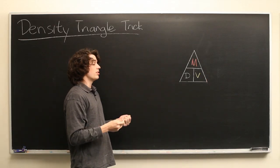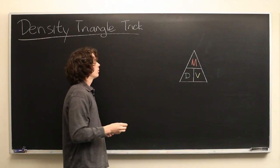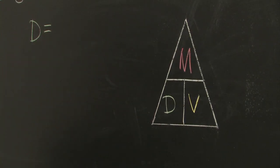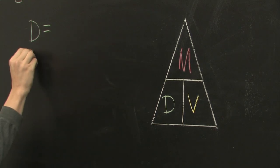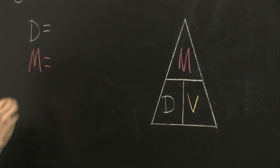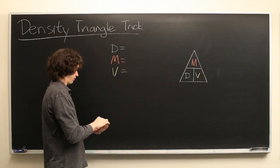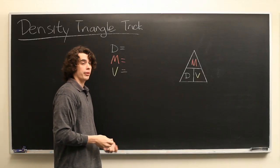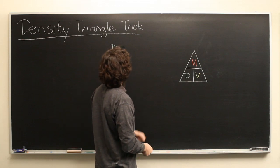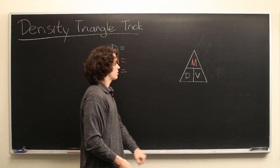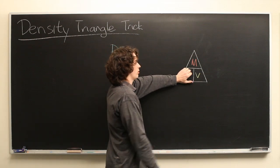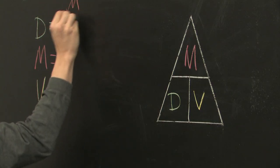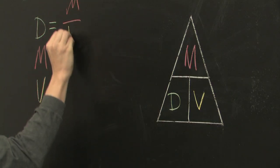We can use the density triangle trick to write each of these three quantities as a function of the other two. D equals what? M equals what? And V equals what? To find each formula, you simply cover up whichever piece you're looking for. Density as a function of mass and volume — simply cover the D in this triangle — we get M over V.